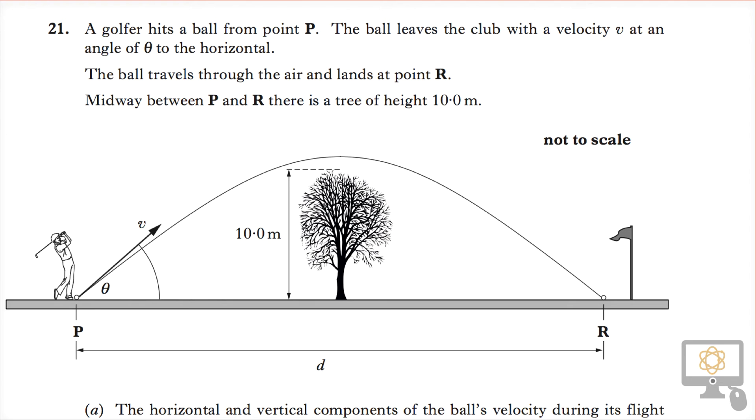This is a look at question 21 from the 2012 revised higher physics paper. It says a golfer hits a ball from point P. The ball leaves the club with a velocity v at an angle of theta to the horizontal.